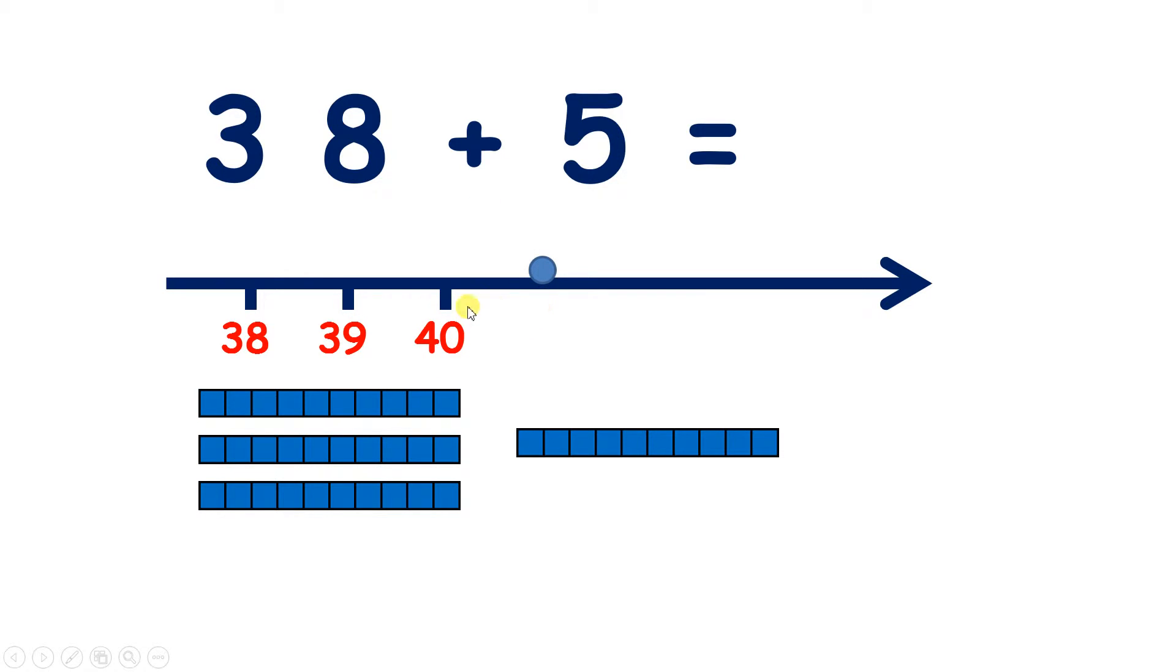Add one more, so that will be the third one that we've added. So one more unit gives us 41. Add another, so this is the fourth one that we've added. So now we have 2 units, and that's 42. So so far we've added 1, 2, 3, 4 units. So if we're adding 5, that's just one more. So we now have 3 units, which gives us 43. So we've added 5 units, and we've got to 43.